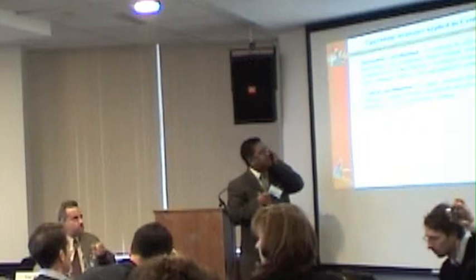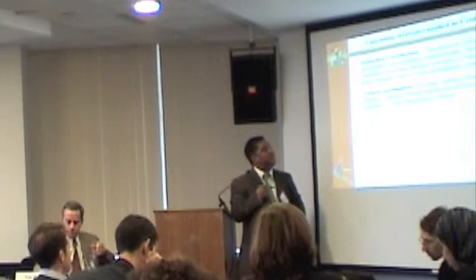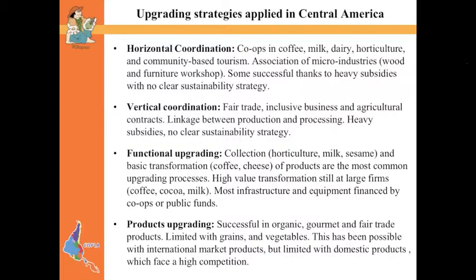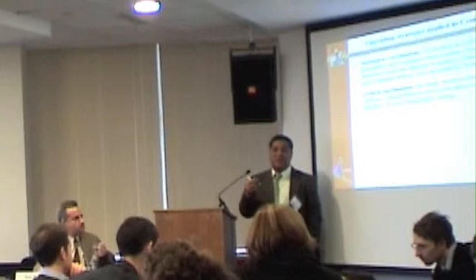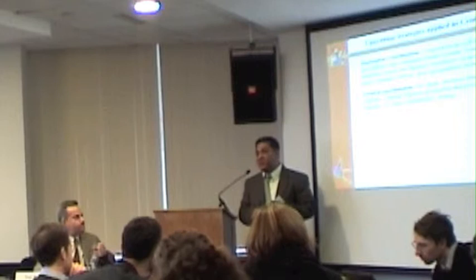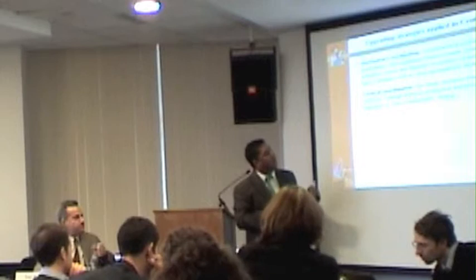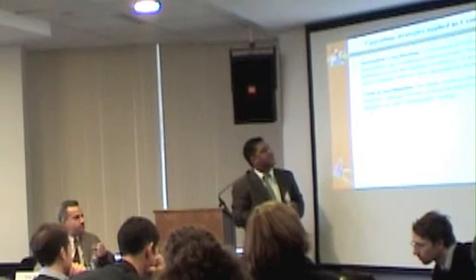What have we done so far? Most of our intervention goes to facilitate horizontal coordination. When I say 'we,' I mean development institutions that have promoted cooperatives — mostly cooperatives for horticulture, coffee, milk, dairy, as well as associations, cooperatives, micro-enterprises, and micro-industries. Most of them are successful. But one of the questions we are asking now is: what is going to happen when the money and subsidies are removed? Because training has also been paid for by international cooperation or public funds. So we have a low level of self-investment. Vertical coordination — fair trade, inclusive business, and agricultural contracts — has also been promoted.